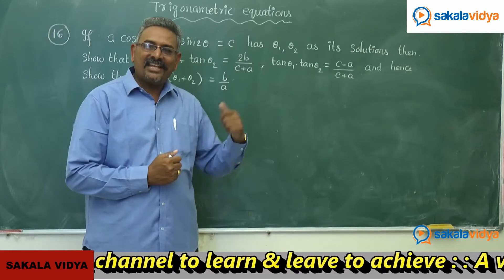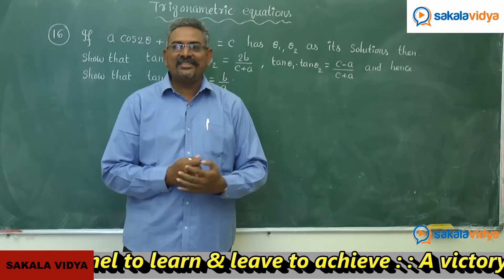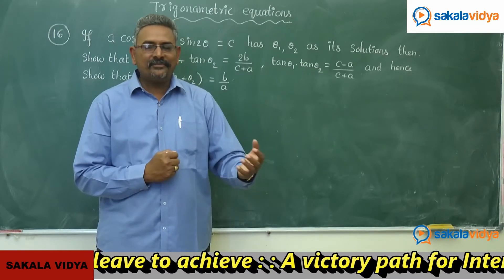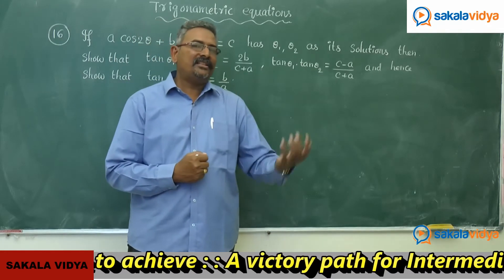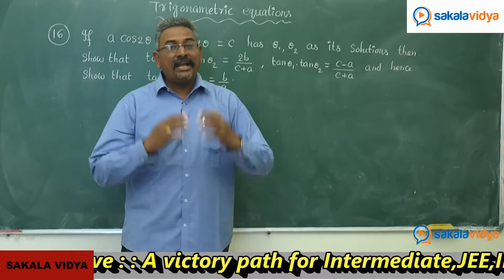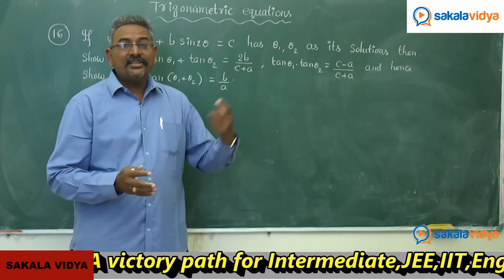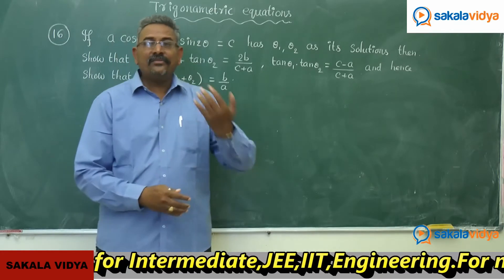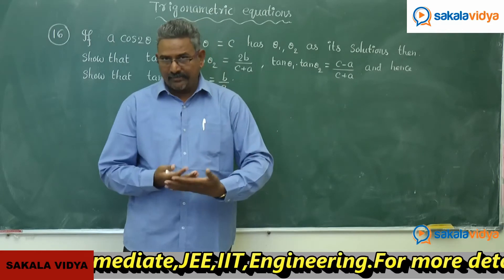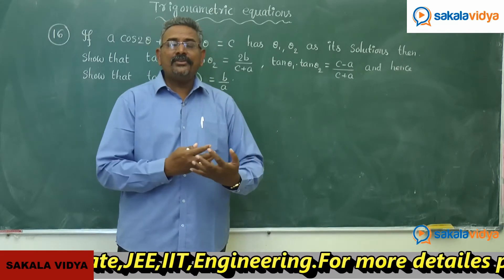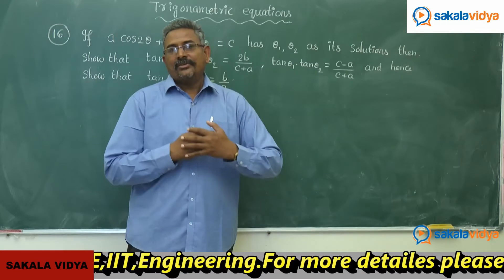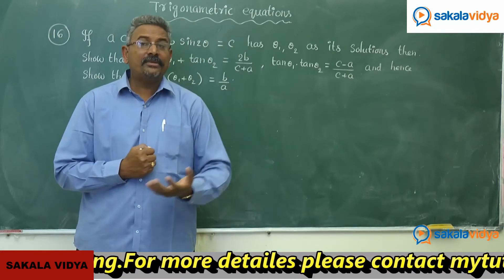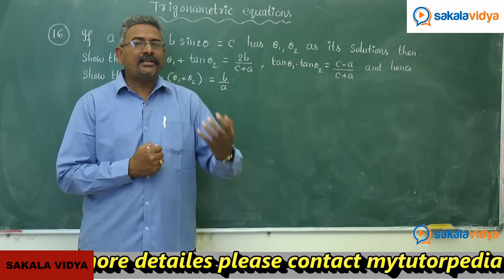So tan θ₁ + tan θ₂ means the sum of the roots that we have to evaluate, and tan θ₁ · tan θ₂ is nothing but the product of the roots. Having evaluated these two values, it is very easy to find tan(θ₁+θ₂), that is in the form of the tan(A+B) formula. Simply using the compound angles formula: tan(A+B) = (tan A + tan B)/(1 − tan A·tan B).